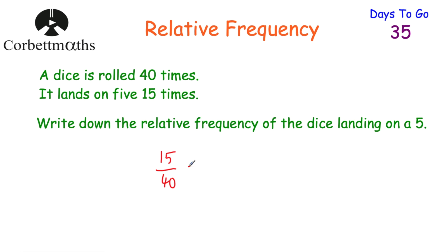Now we weren't asked to cancel this down, but if you did cancel it down, both of these numbers are divisible by 5, so that would give us 3/8. So the relative frequency of a 5 is 15/40 or 3/8. And if you got that, well done.